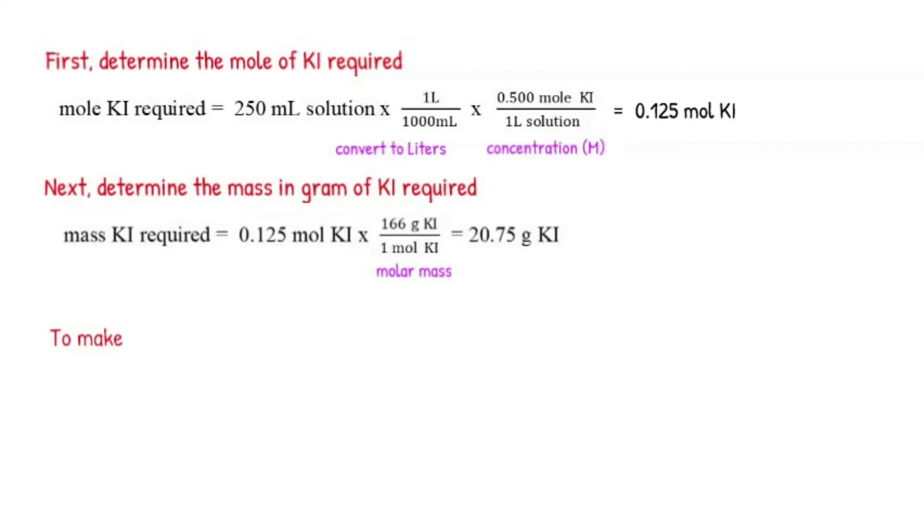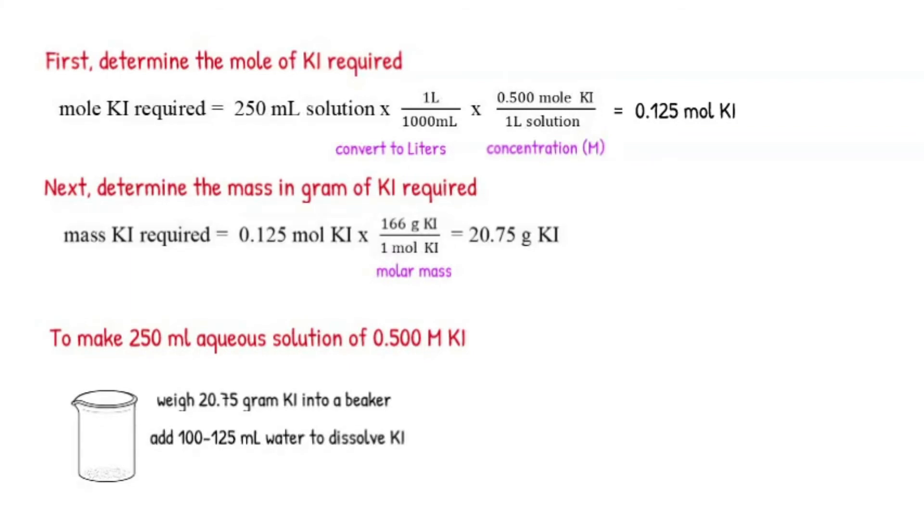To make 250 mL aqueous solution in water as solvent of 0.500 M potassium iodide, follow the following steps. To a clean and dry 250 mL beaker, weigh in 20.75 grams of potassium iodide and then add about 100 to 125 mL of water to dissolve the potassium iodide salt.